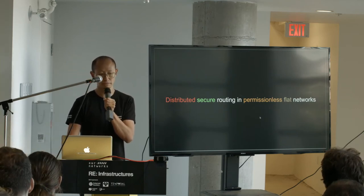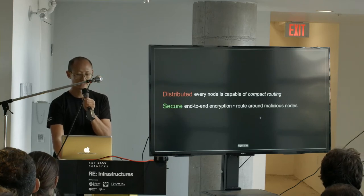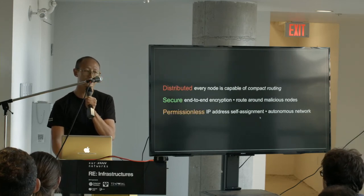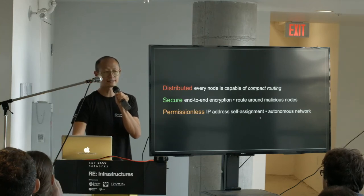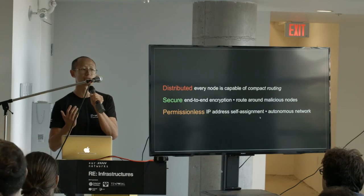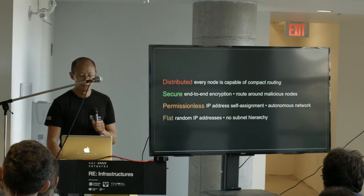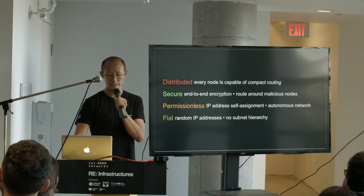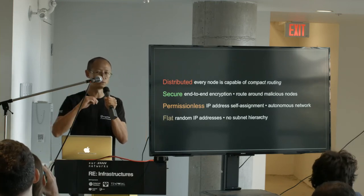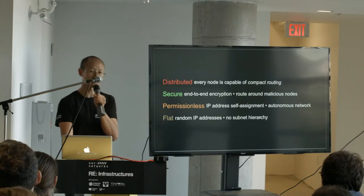That's why I'm particularly interested in flat networks where this hierarchy doesn't exist. Let me better define what these words mean. Distributed means every node is capable of something called compact routing. Secure means end-to-end encryption and the ability to route around malicious nodes. Permissionless means IP addresses can be self-assigned — this allows us to not have to call an ISP to get an IP address. It's an autonomous network: you plug in, generate an IP address, and you are immediately a participant. Flat random IP addresses means we don't encode routing information into the name of a node or use subnet hierarchies, which usually require centralized coordination.